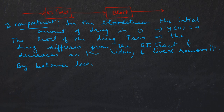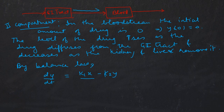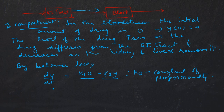By the balance law, we have dy/dt — the rate of change of drug in the blood — equal to k1·x minus k2·y. The k1·x term is the rate at which drug enters the blood from the GI tract, and k2·y is the rate at which drug is removed from the blood. Here k2 is also a constant of proportionality, and y(0) = 0 is our initial condition.